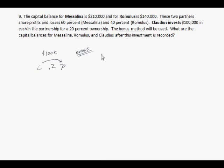In this problem, we have a partnership consisting of two members. It's got Messalina, who has a capital balance of $210,000, and Romulus, who has a capital balance of $140,000. And in the problem, Claudius is going to invest $100,000 into the partnership, and he expects to get a 20% ownership out of that.